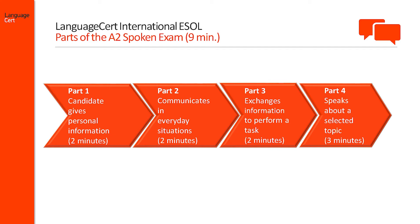In Part 3, the candidate and the interlocutor give and receive information in order to perform a communicative task. Without looking at each other's picture, they need to spot the differences by means of questions and answers. The duration of this part is 2 minutes.